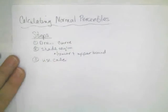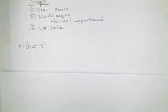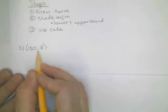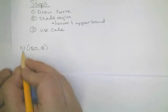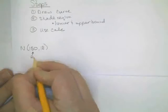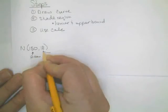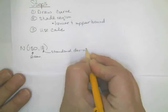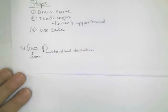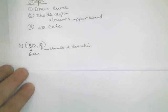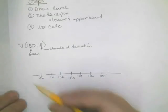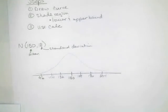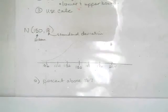So let's go ahead and do an example. If I have N(150, 18), that means the normal distribution where the first number represents my mean and the second number represents my standard deviation. You need to go ahead and draw your normal curve that includes those intervals and that mean. I went ahead and put my picture in a sleeve so I don't have to keep drawing it.